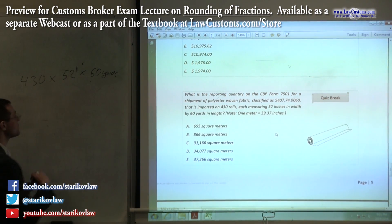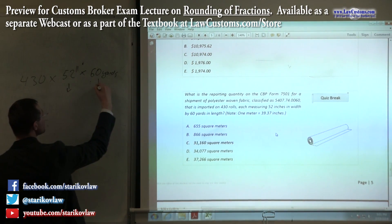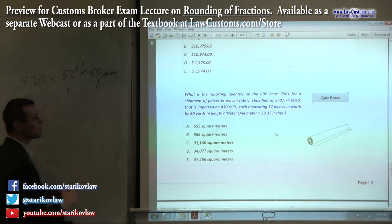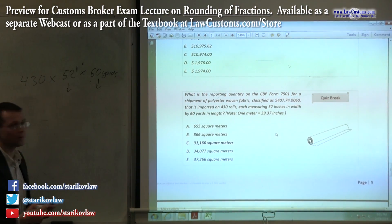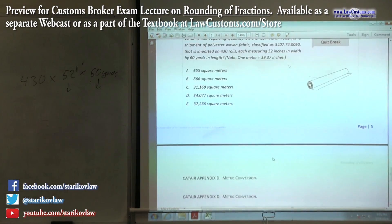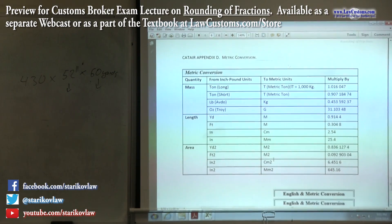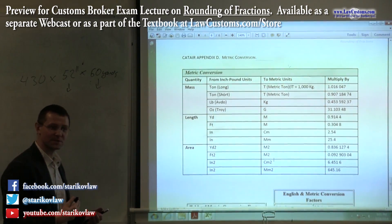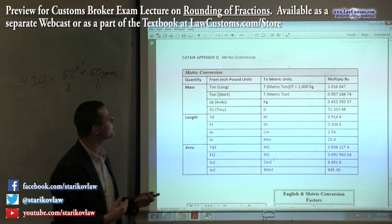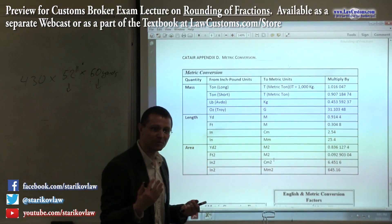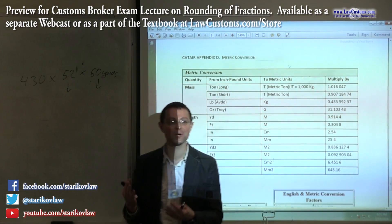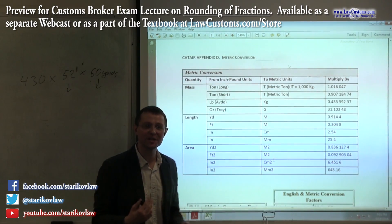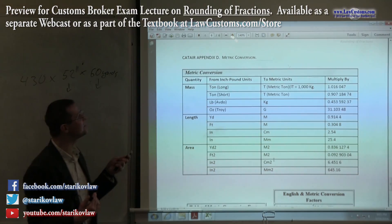So what do you do? We have an appendix — Katair. Remember we talked about Katair already; we talked about Katair Appendix E when we talked about entry numbers. Now we come across another appendix, which is Appendix D, for the conversion to square meters.